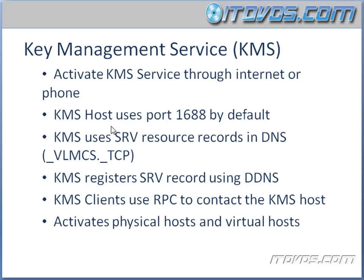Some important things to know about KMS: it uses port 1688 by default, though we can change this. KMS also uses an SRV resource record in DNS, specifically the _VLMCS._TCP record. This is how your Windows 7 machines find the KMS service in order to activate. Without this DNS record, they're normally not going to be able to find it unless we configure it manually to point to a specific KMS server.